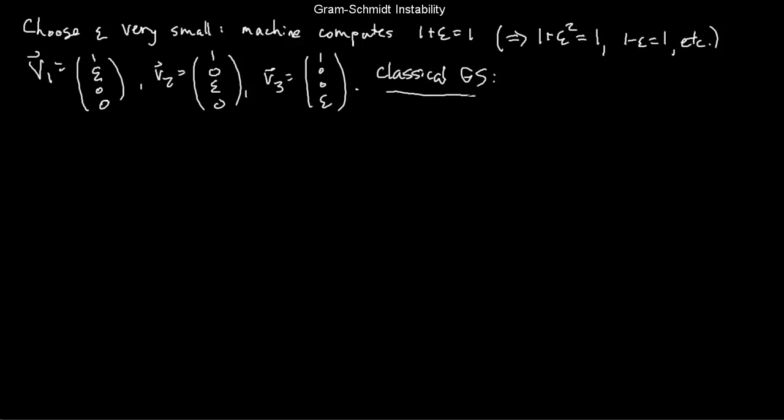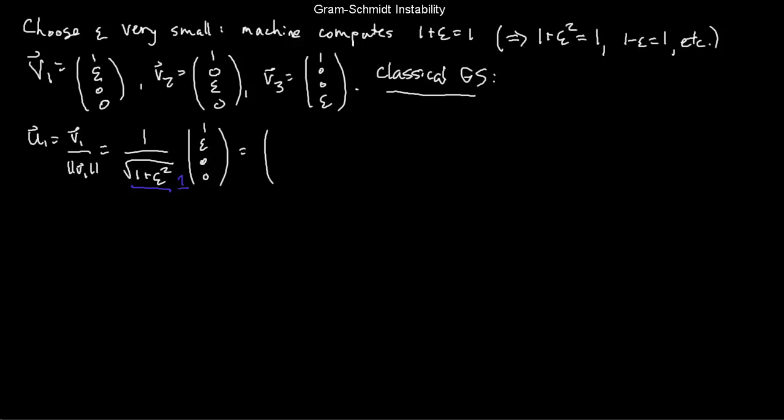You can enter these into your computer fine — it's only when you ask it to do computations that things go a little haywire. The classical algorithm says: to get u1, I'll just normalize v1. The norm is √(1 + ε²), and since 1 + ε² = 1 as far as the machine is concerned, u1 is really just the same as v1: (1, ε, 0, 0).